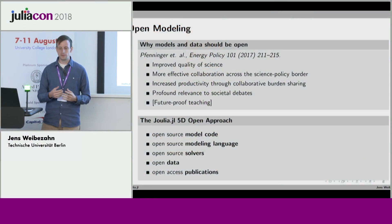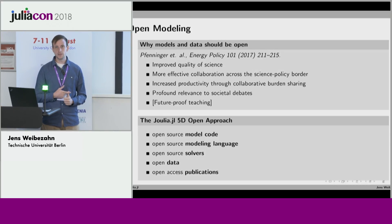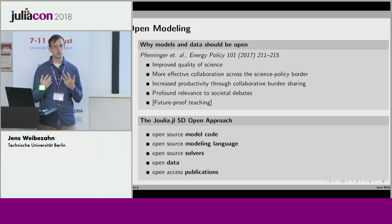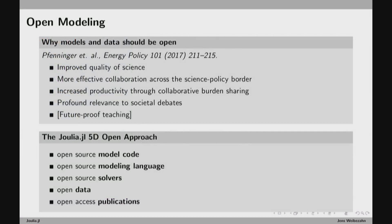This is why with Julia.jl we want to move to what we call a 5D open approach — five dimensions. The model code has to be open source, which is already the case for our models. But we also want to use an open source modeling language, prove it's possible to use open source solvers, only work with open data and not data from companies that others can't legally use, and publish all outcomes in open access journals so people don't have to pay for them.